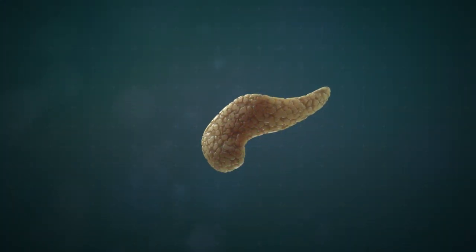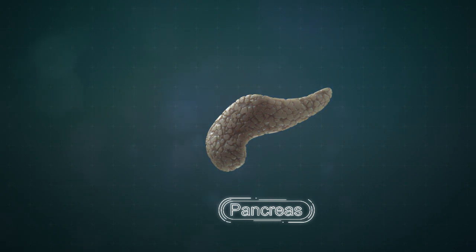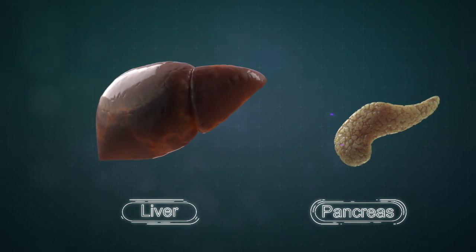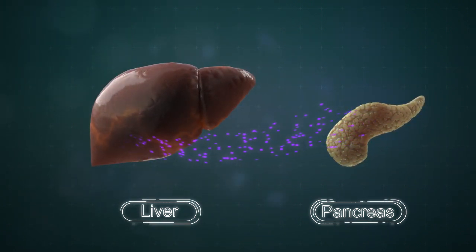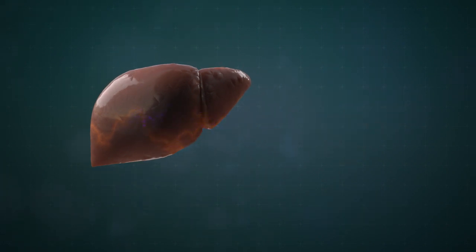Type 1 diabetes is caused by the loss of the insulin secreting beta cells. Islet transplantation from cadaveric donors can cure the disease but donor scarcity requires finding alternative sources.